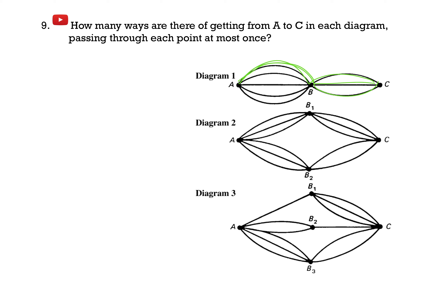But rather than doing that, what we can do is add up how many ways there are to get to each node — that is, how many ways to go from A to B and from B to C. So to go from A to B, there are 1, 2, 3, 4, 5 ways.